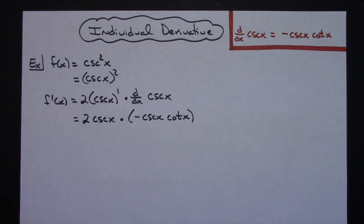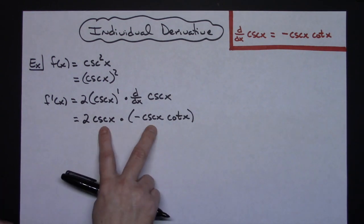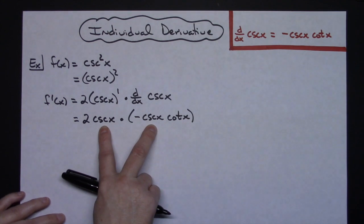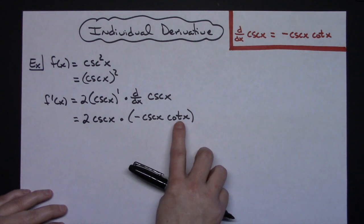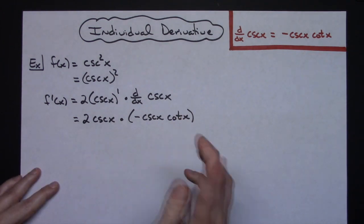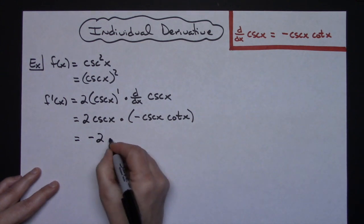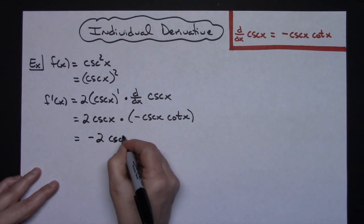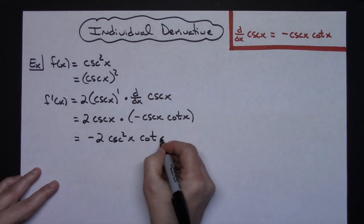At this point it's just a matter of cleaning your answer up. I can take the negative and the 2 and pull that out in front. I have two cosecants so I can write it with a squared, matching the format of the original problem, and then having that cotangent on the end.